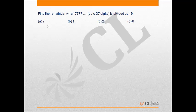In this question we need to calculate the remainder when 777 written 37 times is divided by 19. We can apply a concept here.